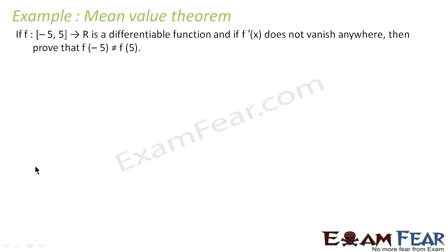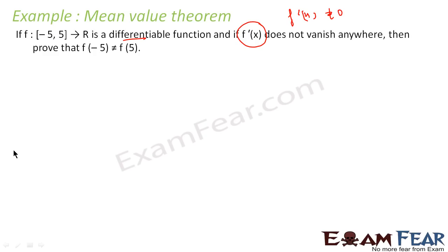Let's check one more question. The question says there is a function from [-5, 5] to R, it is a differentiable function, and f'(x) does not vanish — meaning f'(x) is never 0. We have to prove that f(-5) is not equal to f(5). Since it is a differentiable function, it has to be a continuous function, so both conditions are true and we can apply the mean value theorem.